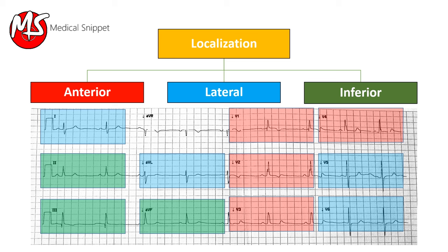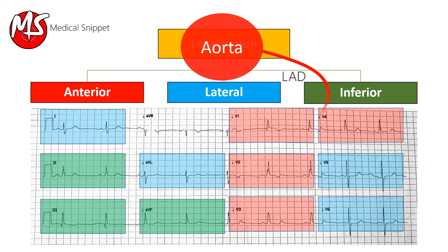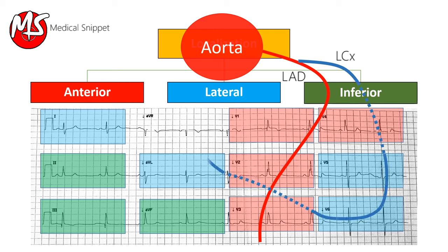Anterior wall myocardial infarction is due to block in the left anterior descending artery. Lateral wall myocardial infarction is due to block in the circumflex artery and its obtuse marginal branches, and blocks in diagonal branches of the LAD can also cause lateral infarction.